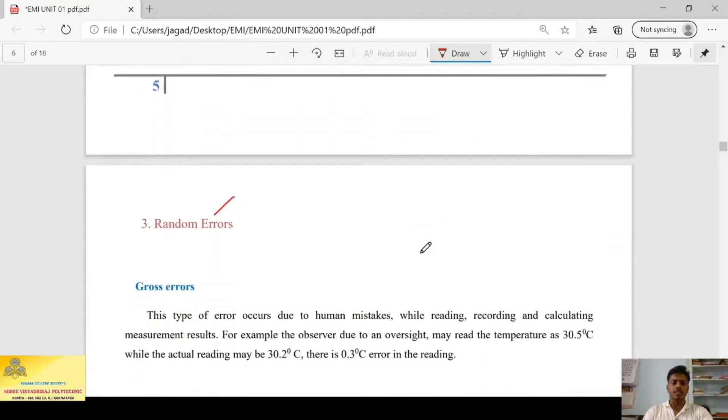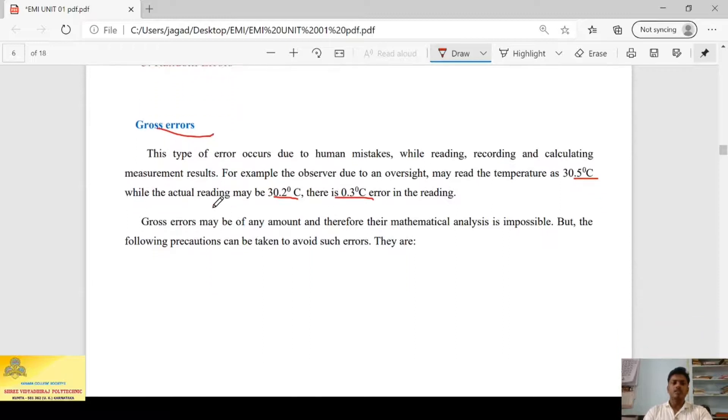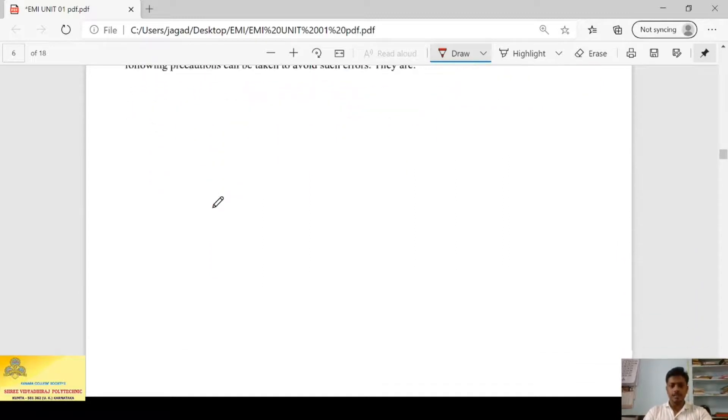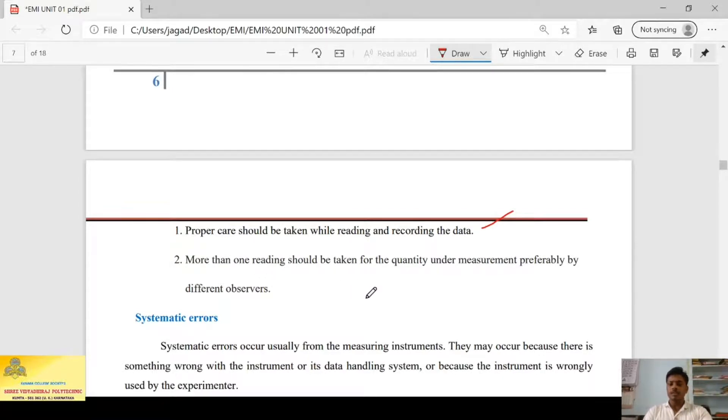First one is gross error. This type of error occurs due to human mistakes. Like, let's take an example. You are reading some instrument and instead of reading 30.2 degrees Celsius, you have read 30.5 degrees Celsius. That means the actual value is 30.2 but by mistake you are reading 30.5. There is an error of 0.3 degrees Celsius in the reading. This kind of errors are called gross errors.